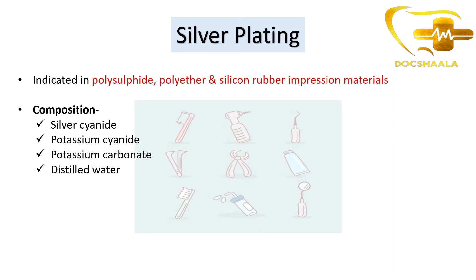Coming to silver plating: the procedure for making the die is similar to copper plating, with a few differences. Silver plating is indicated when using polysulfide, polyether, and silicone rubber impression materials, whereas copper plating is used for compound and additional silicone materials.